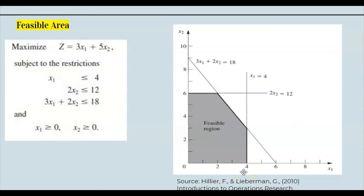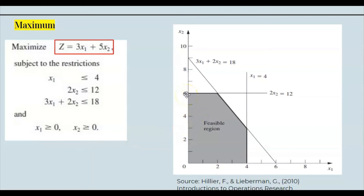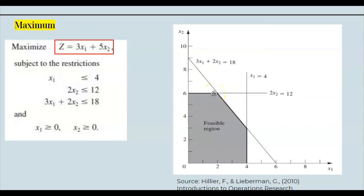Once we know the feasible area, we use the objective function to find the maximum value. We need to find where two lines intersect and get the coordinates — essentially the corners of the feasible area. Those intersection corners are the points we need.